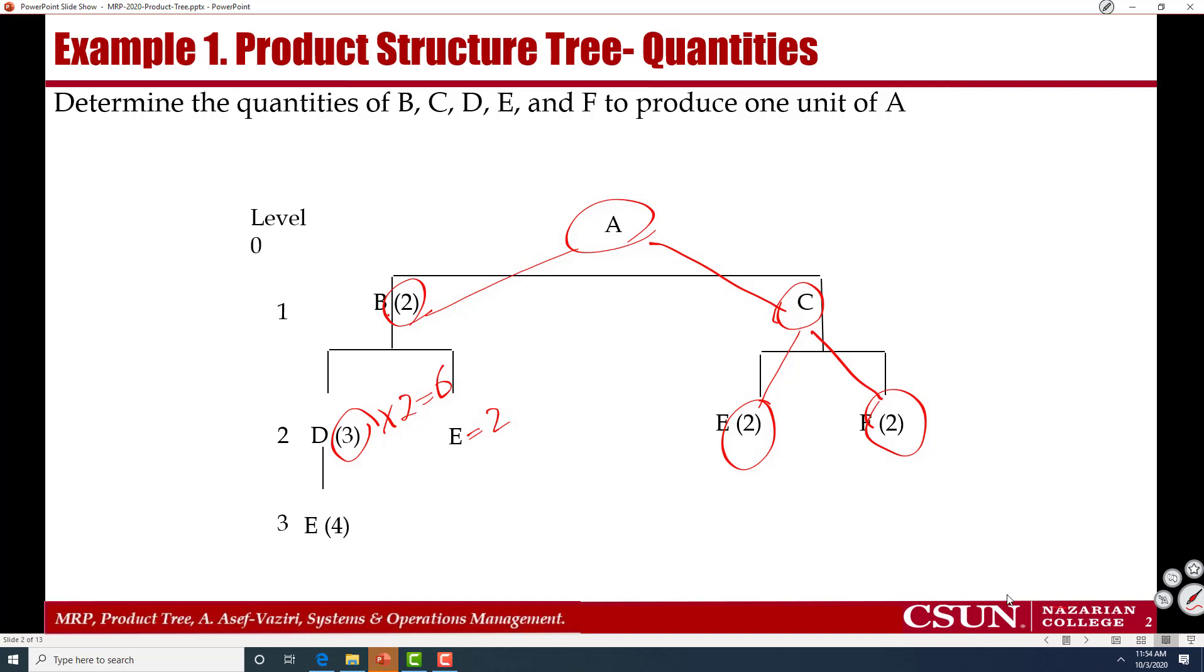For each product D we need 4Es. Therefore 6 times 4 is equal to 24. We need 24E here, 2E here, and 2E here. Therefore total we need 28E.